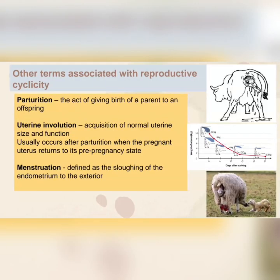Other terms associated with reproductive cyclicity: we have parturition, or the act of giving birth of a parent to an offspring. Next is uterine involution — it is the acquisition of normal uterine size and function, which usually occurs after parturition when the pregnant uterus returns to its pre-pregnancy state. We also have the term menstruation, which is defined as the sloughing of the endometrium to the exterior.